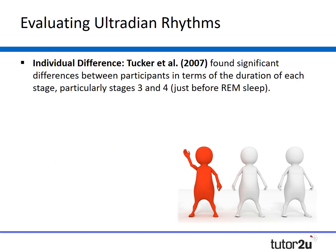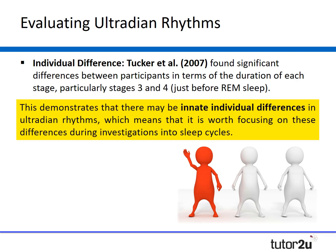Further research supports this and highlights key individual differences in ultradian rhythms. Tucker O'Tell found significant differences between participants in terms of the duration of each stage of sleep, particularly in stages 3 and 4 — the deep sleep stages just before REM sleep. This demonstrates that there may be innate individual differences in ultradian rhythms, which means it's worth focusing on these differences during investigations and taking a slightly different approach.